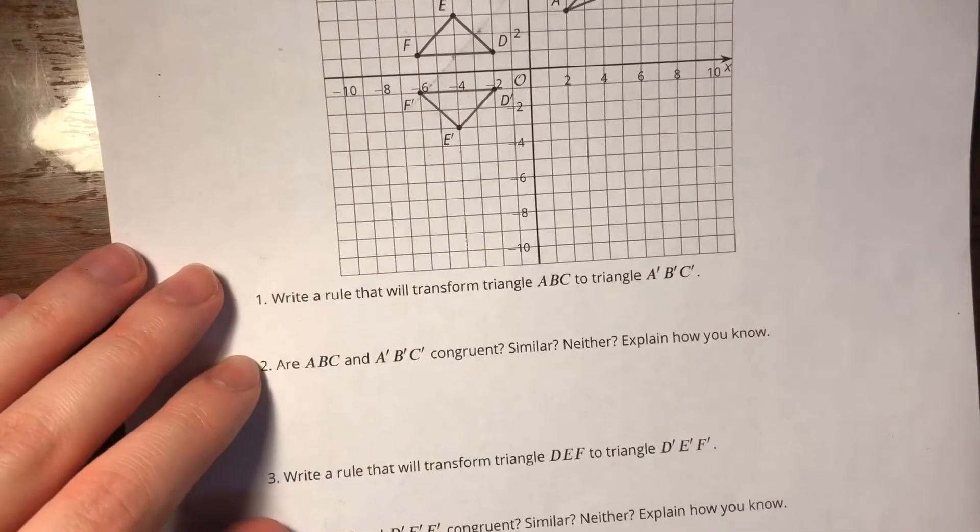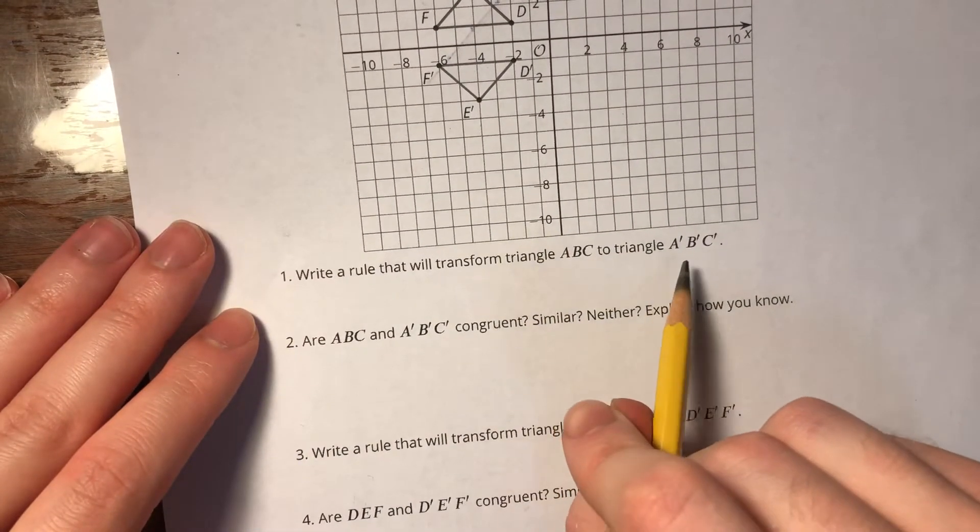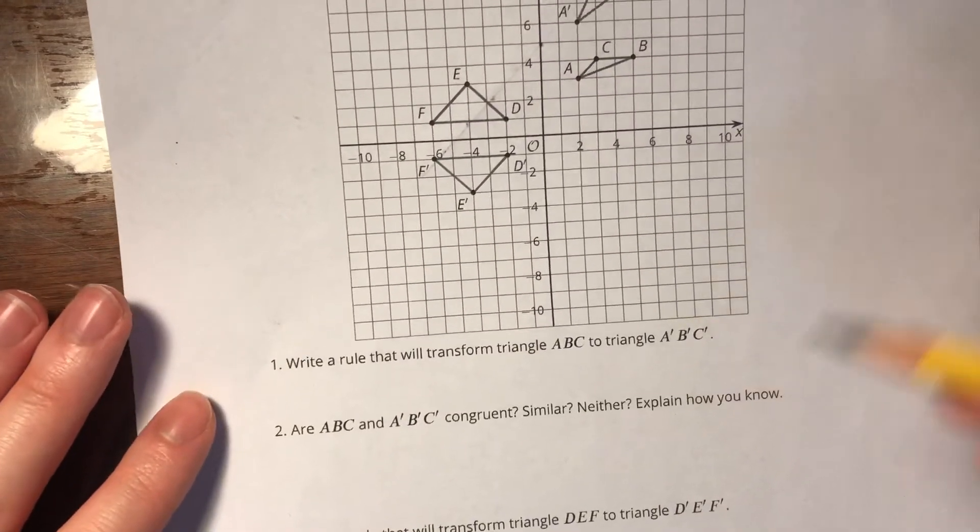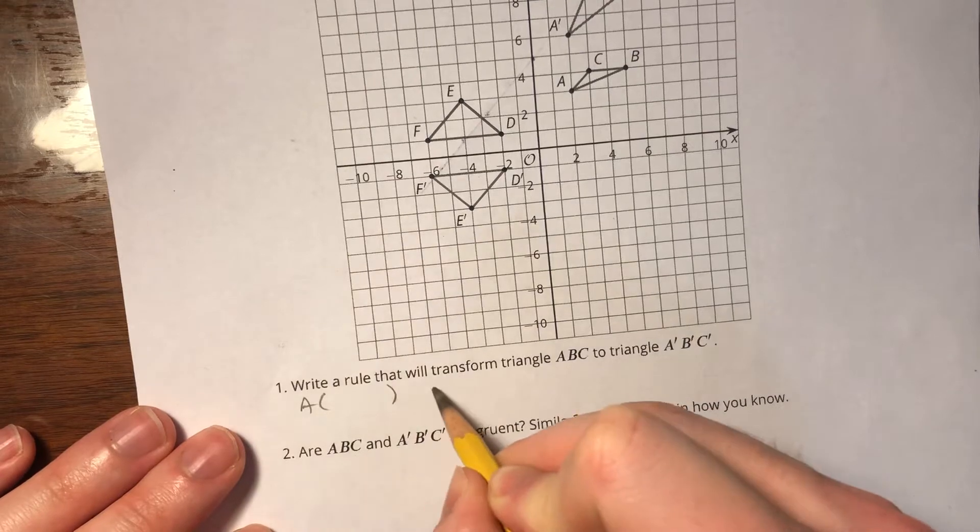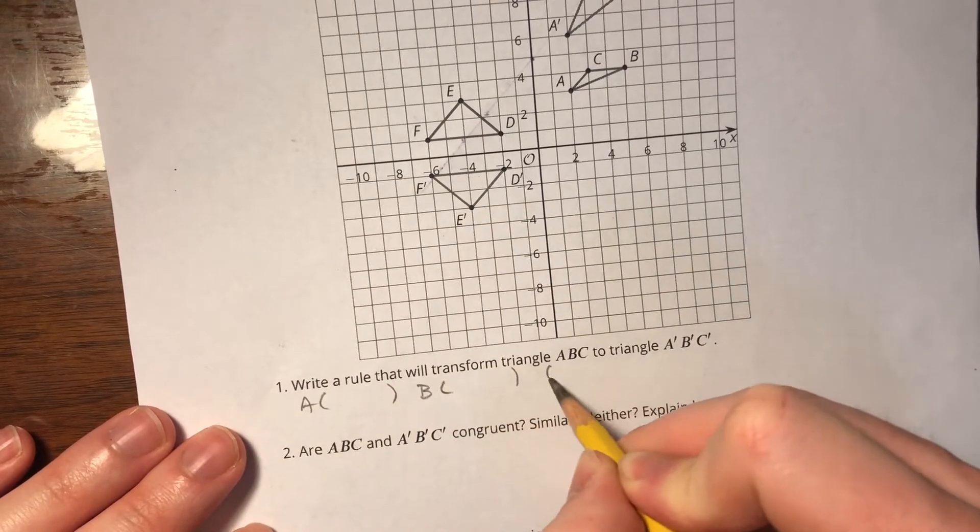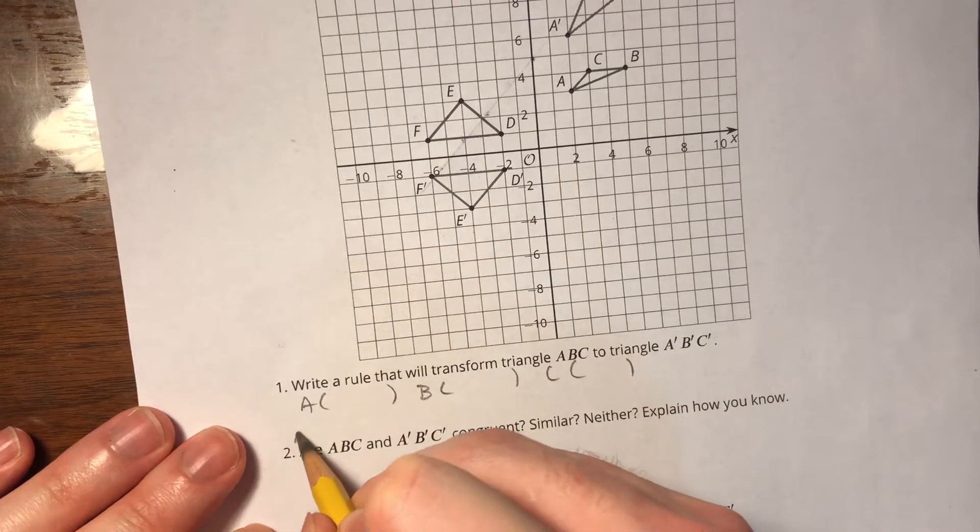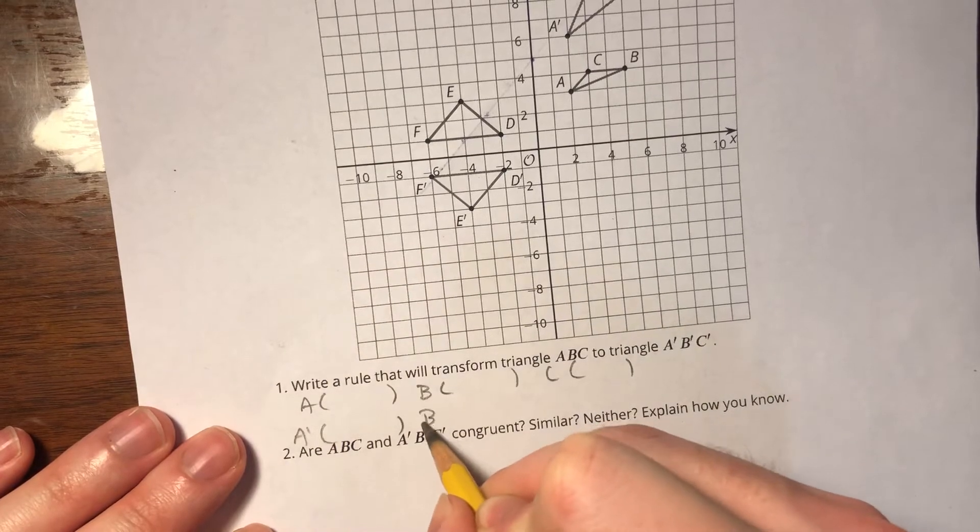Alright, write a rule that will transform triangle ABC to triangle A'B'C'. So just like we did in are you ready for more in 3.2, I'm going to write out my coordinates because that's the easiest way to see what's happening to them.